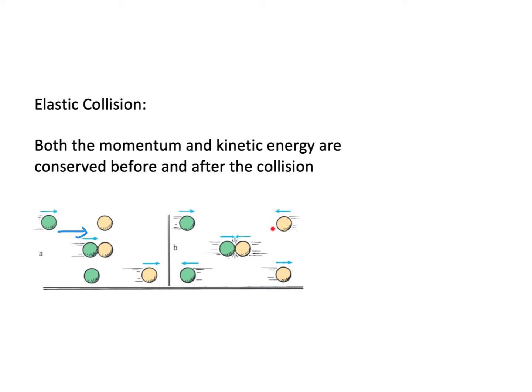Another possibility is two balls colliding head-on. The yellow ball and green ball are moving towards one another. The green ball has positive momentum and the yellow ball has negative momentum. After the collision they bounce off — the green ball now has negative momentum and the yellow ball has positive momentum. When you add the momenta before and after the collision you get the same value. If it is an elastic collision, the total kinetic energy — one-half mv squared for all balls — will also be conserved.